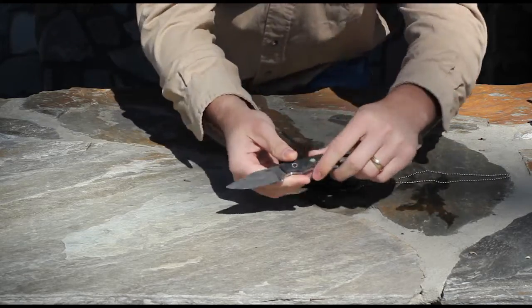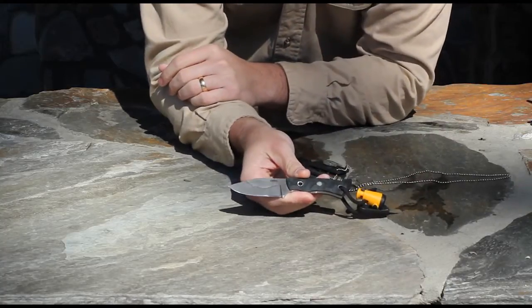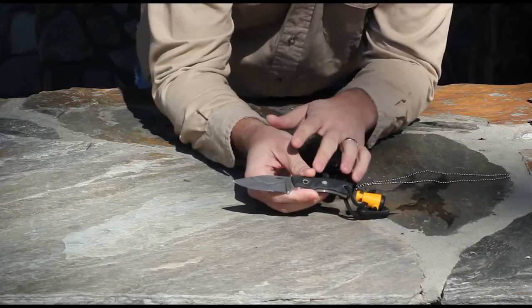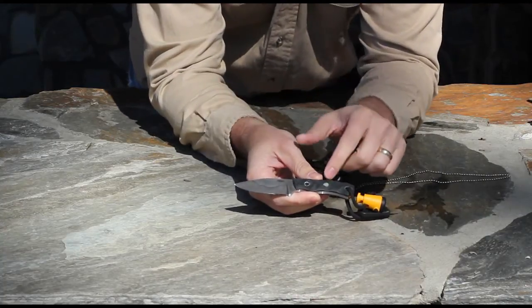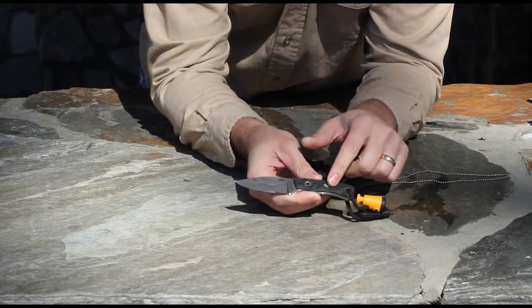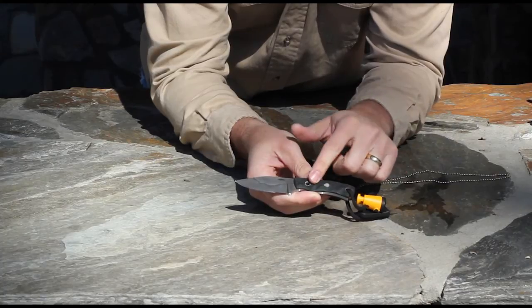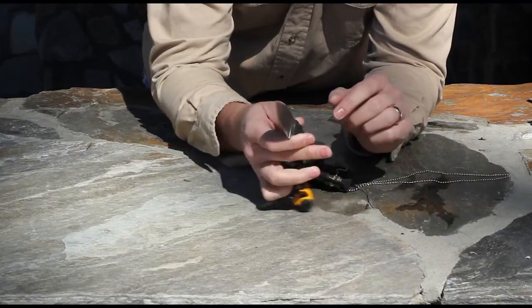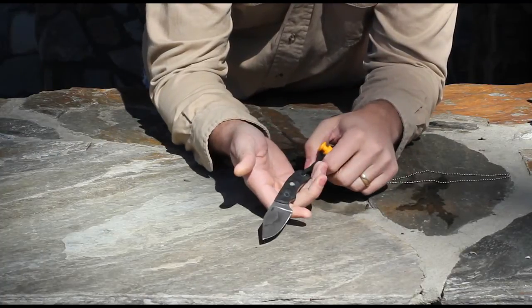The knife is a 1095 steel and it has a nice patina to it. It also has a G10 handle with a glow in the dark dot and two stainless steel hollow tubes here that holds it in. The blade is two and a half inches with an overall length of six inches.